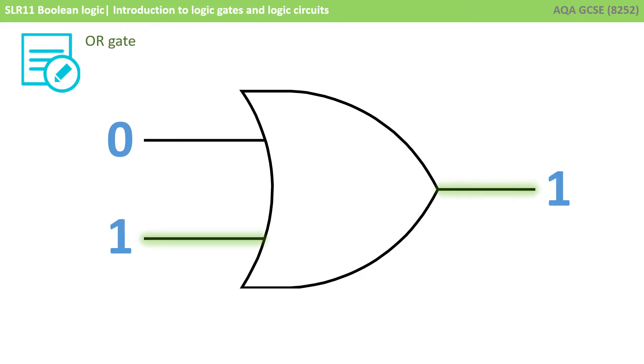Now we have at least one input as a 1, the output is 1. It's the same if we switch them around, and indeed the same if they're both ON.